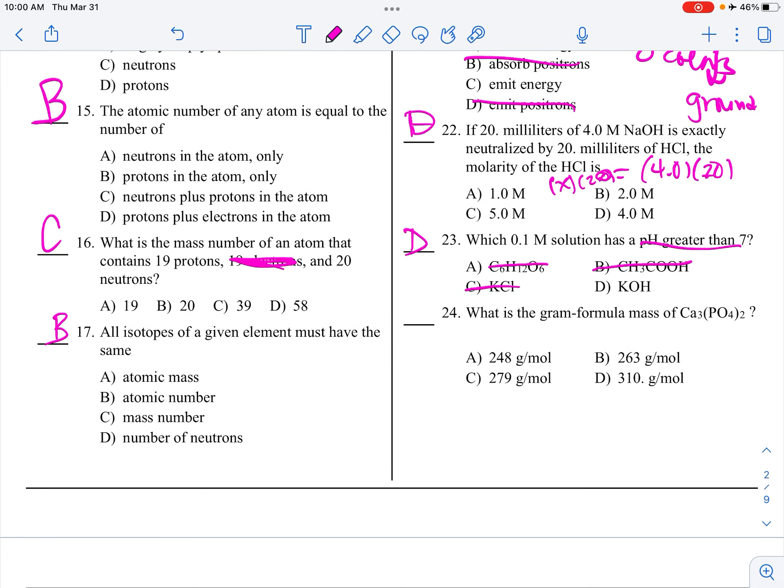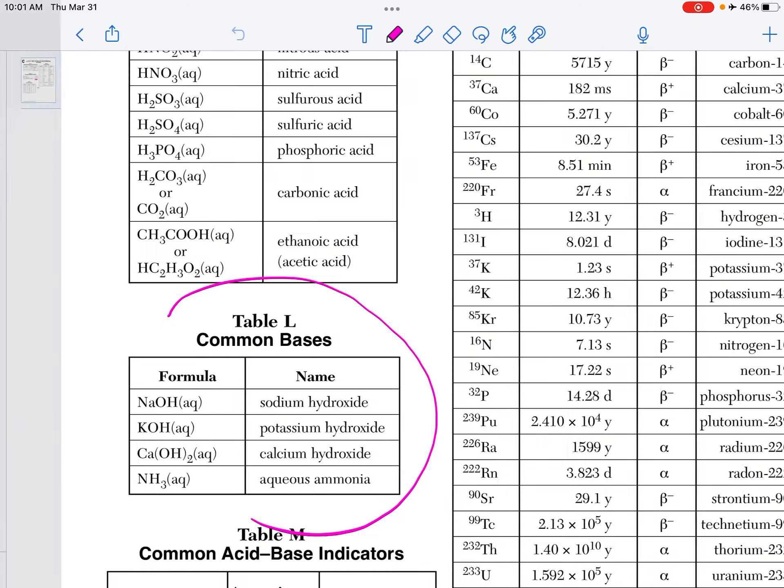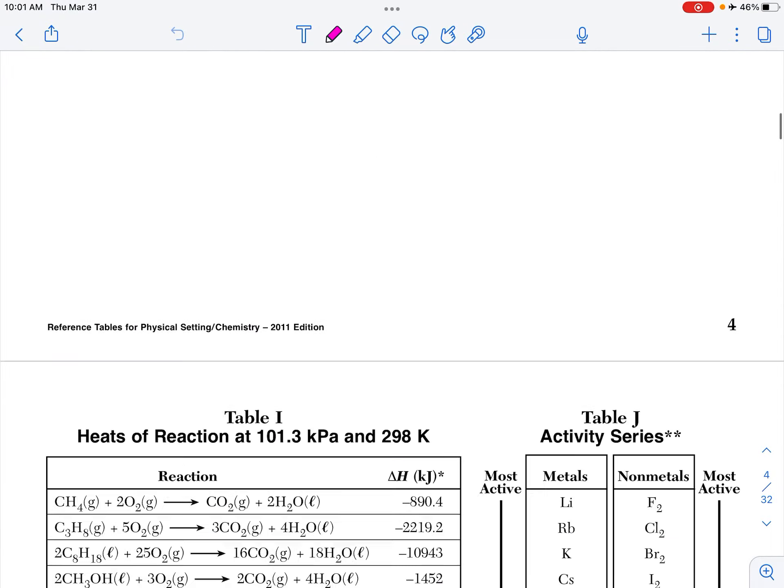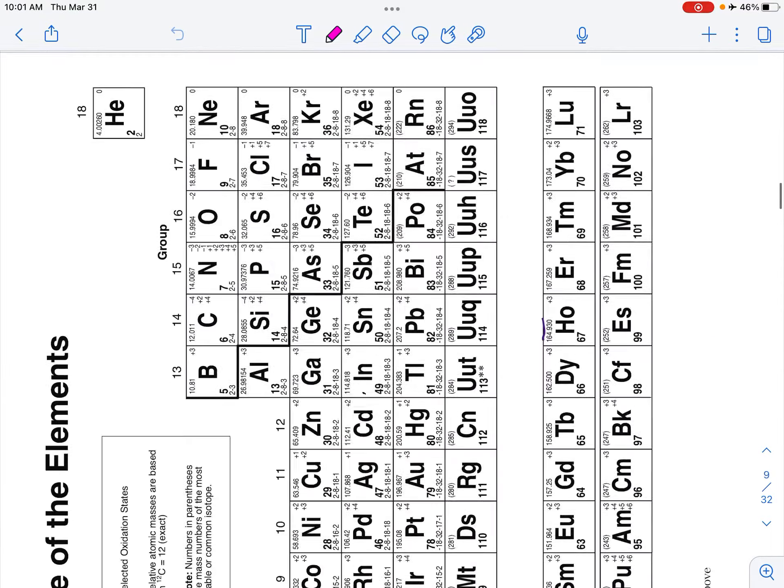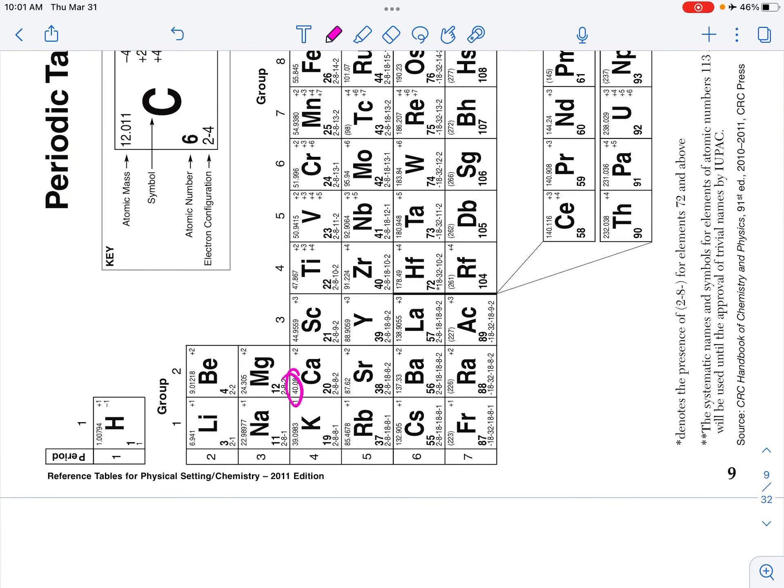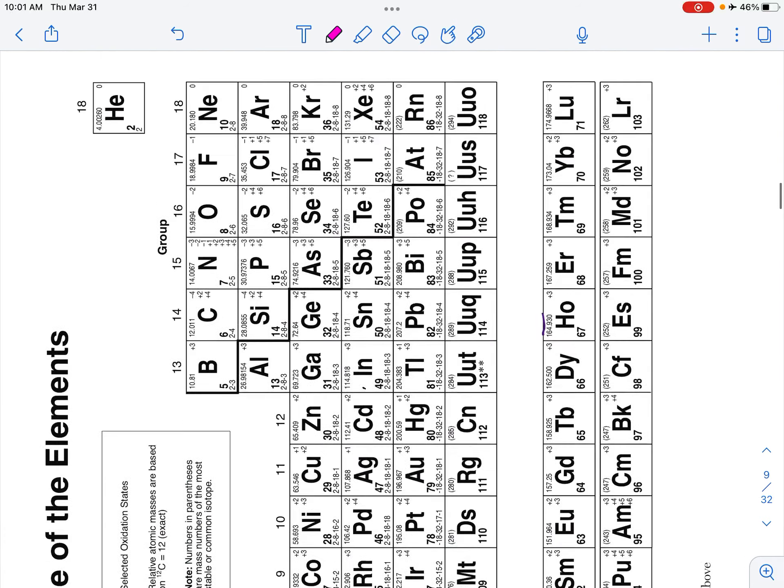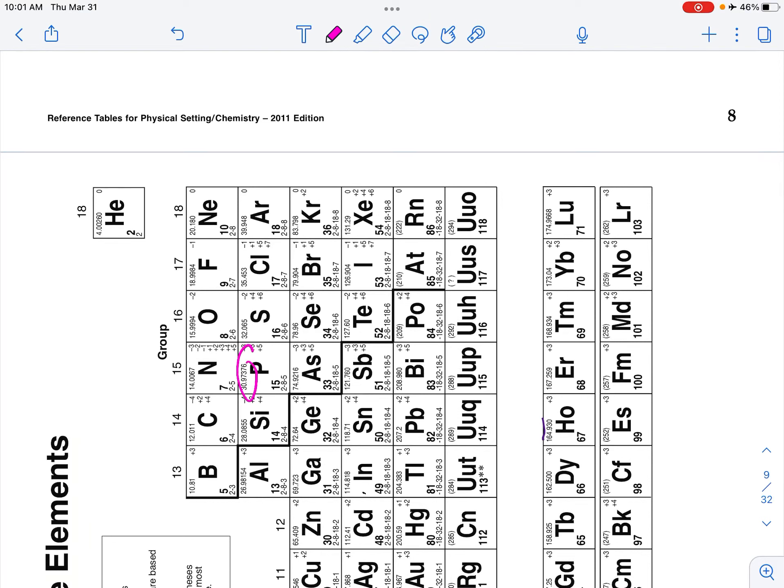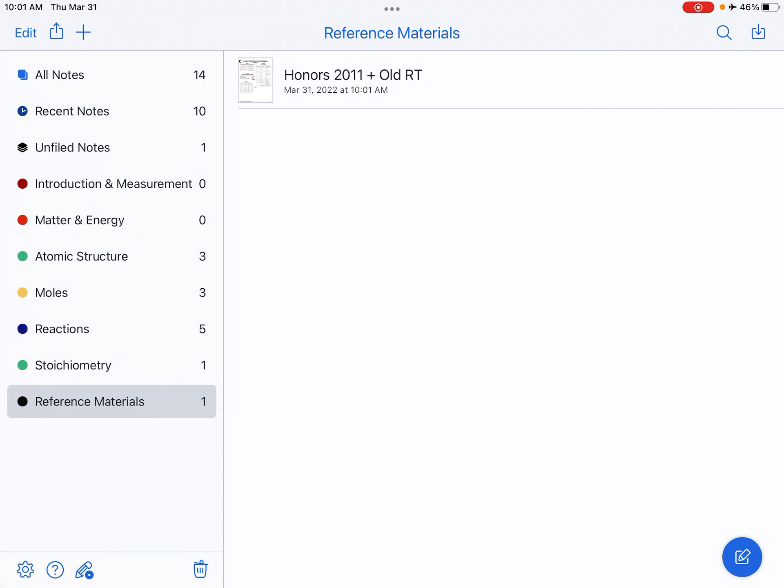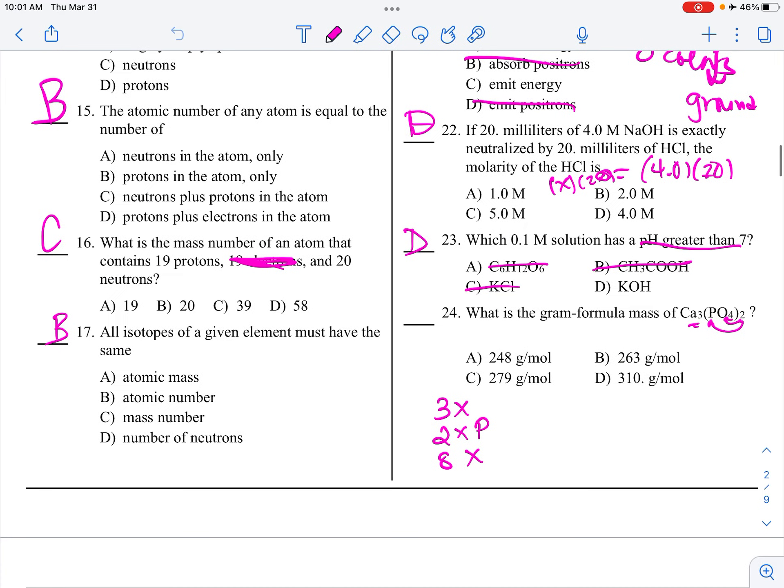What is the GFM of this? So, I'm going to have 3 times whatever calcium is, 2 times whatever phosphorus is, and 8 times whatever oxygen is. So, unfortunately, my periodic table is sideways, but I need calcium, phosphorus, and oxygen. So, calcium, the mass is 40.08. I'm going to call that 40. Phosphorus is 30.9. I'm going to call that 31. And 15.9. I'm going to call that 16.